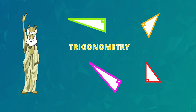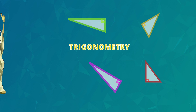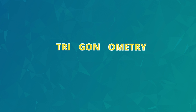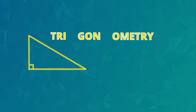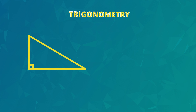Actually, the word trigonometry is Greek. Tri means three, gon means a shape, and metri means measure. So trigonometry is used to calculate the sizes of the sides and the angles in right-angled triangles.